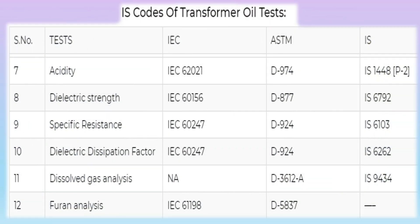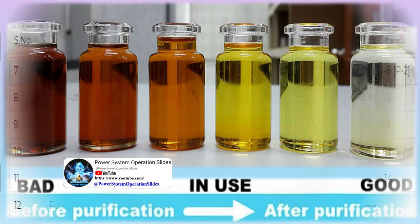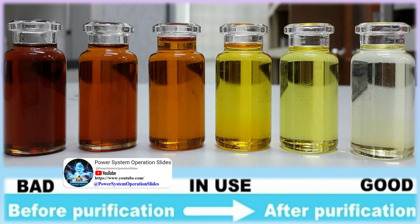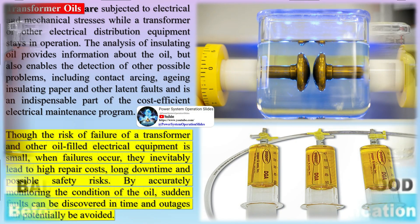Transformer oils are subjected to electrical and mechanical stresses while a transformer or other electrical distribution equipment is in operation. The analysis of insulating oil provides information about the oil and enables detection of possible problems including contact arcing, aging insulating paper, and other latent faults, and is an indispensable part of a cost-efficient electrical maintenance program.